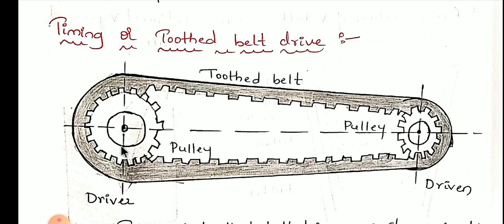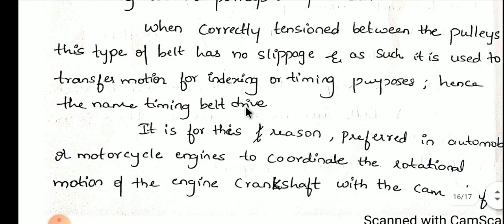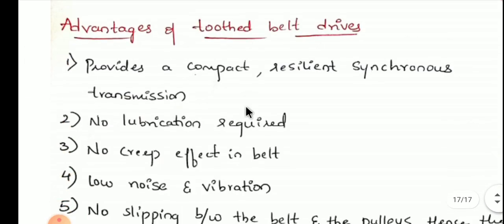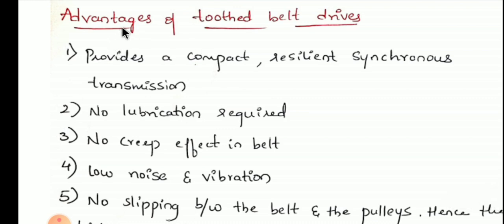Timing belt drives are used in automobiles or motor engines to coordinate the rotation of the engine crankshaft with the camshaft. One of the key advantages is that it provides a compact, resilience synchronized transmission — it synchronizes with the transmission, which is why slippage will not occur.